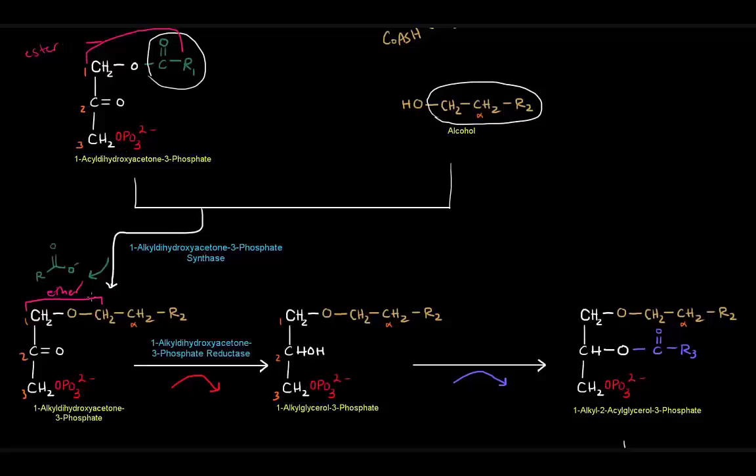And the enzyme that catalyzes this reaction is 1-alkyl dihydroxyacetone 3-phosphate reductase, named for the fact that it's acting on this 1-alkyl dihydroxyacetone 3-phosphate. That is a mouthful, goodness gracious. And the reducing agent here for this reductase is NADPH again. So that gives us this alcohol, 1-alkyl glycerol 3-phosphate.